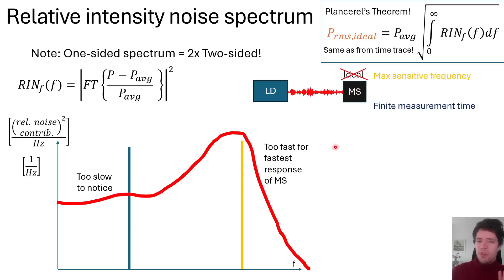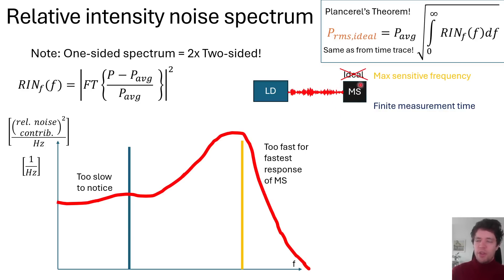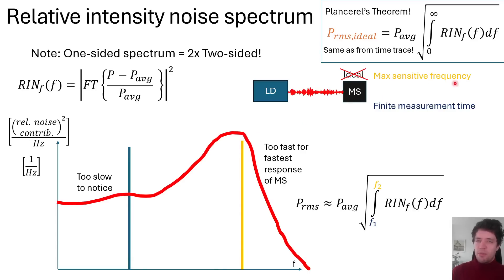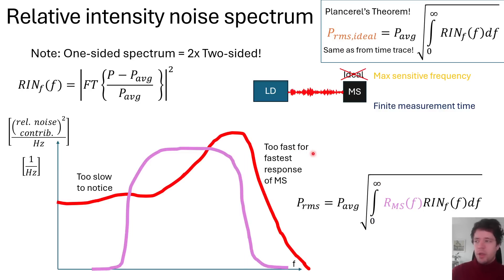This is similar to how you can watch a video on a screen even though the screen is flashing discrete images very quickly — because the flashing rate is much higher than the update rate of your eye, it looks like a smooth transition. The point is: to compute the RMS variation measured with a non-ideal system, simply integrate the RIN curve from the lower frequency cutoff up to the upper frequency cutoff, then take the square root and multiply by the average power. Technically, you should multiply the RIN curve by a response function and integrate from zero to infinity, but the hard-cutoff approximation works well in most cases.